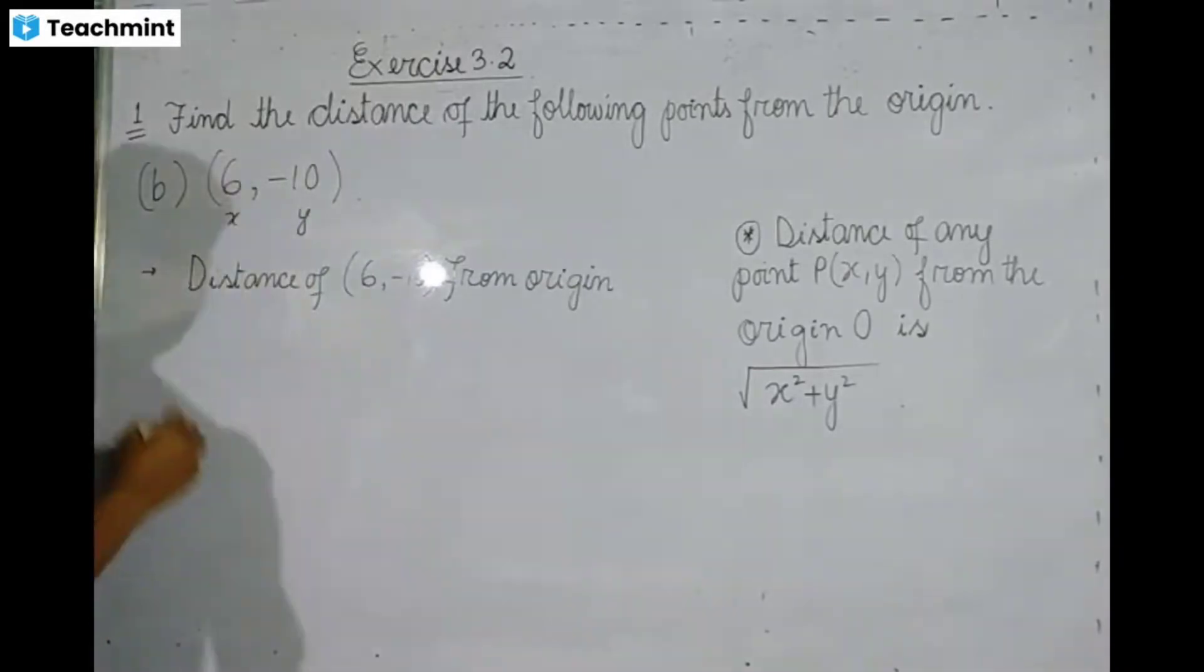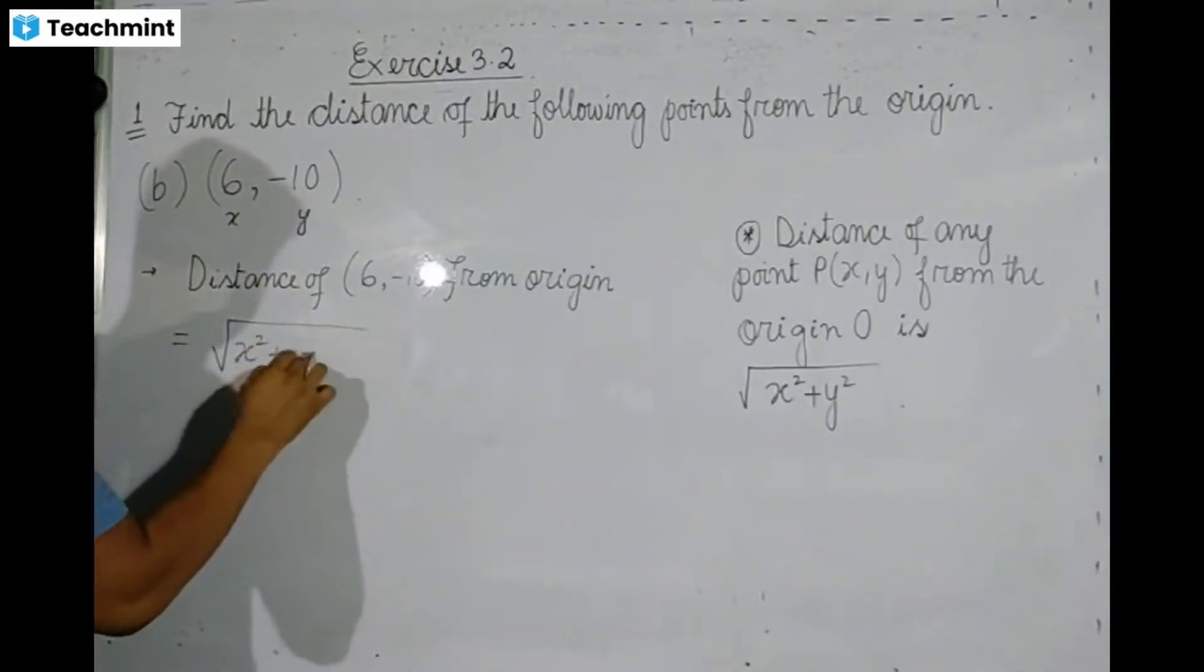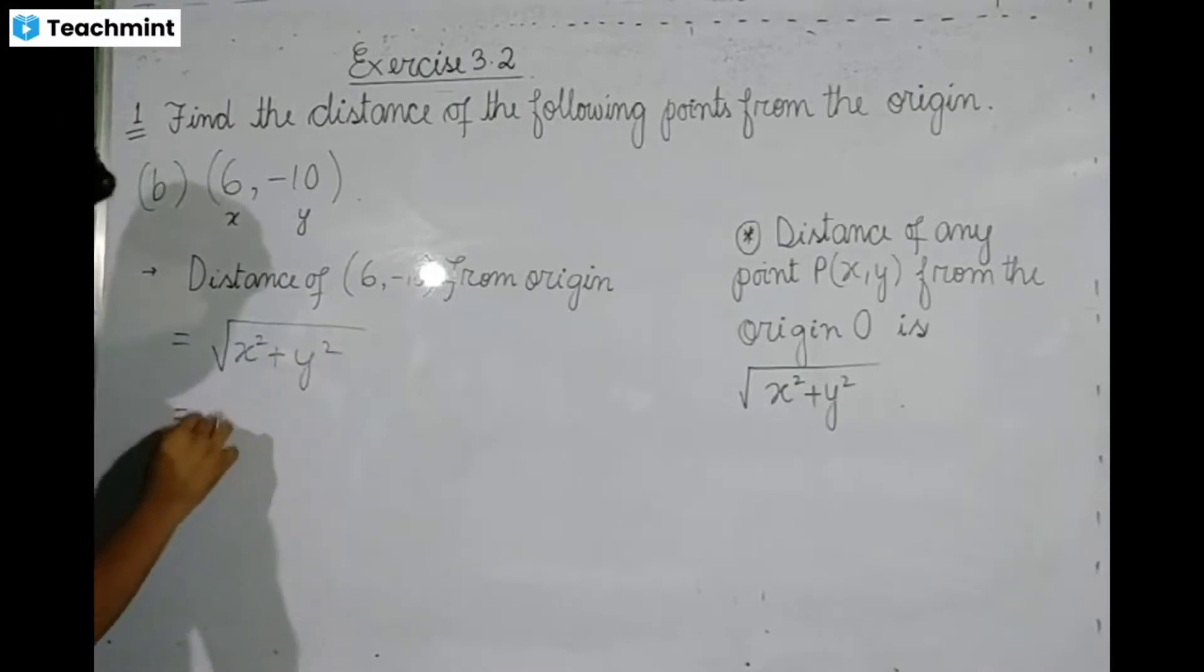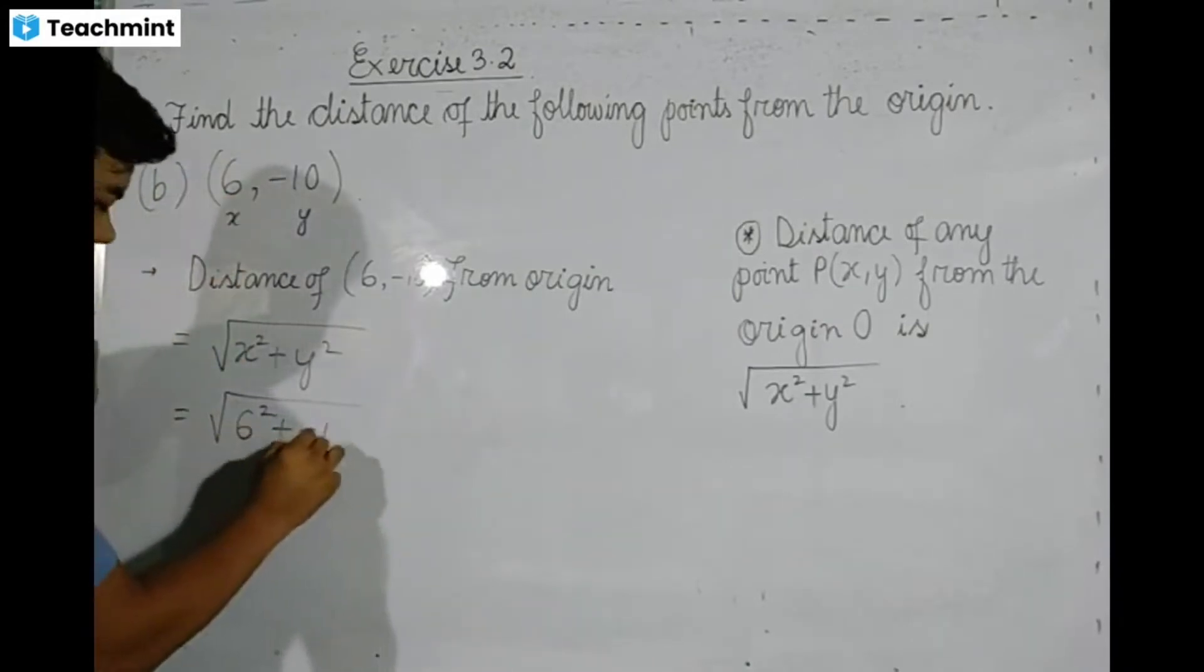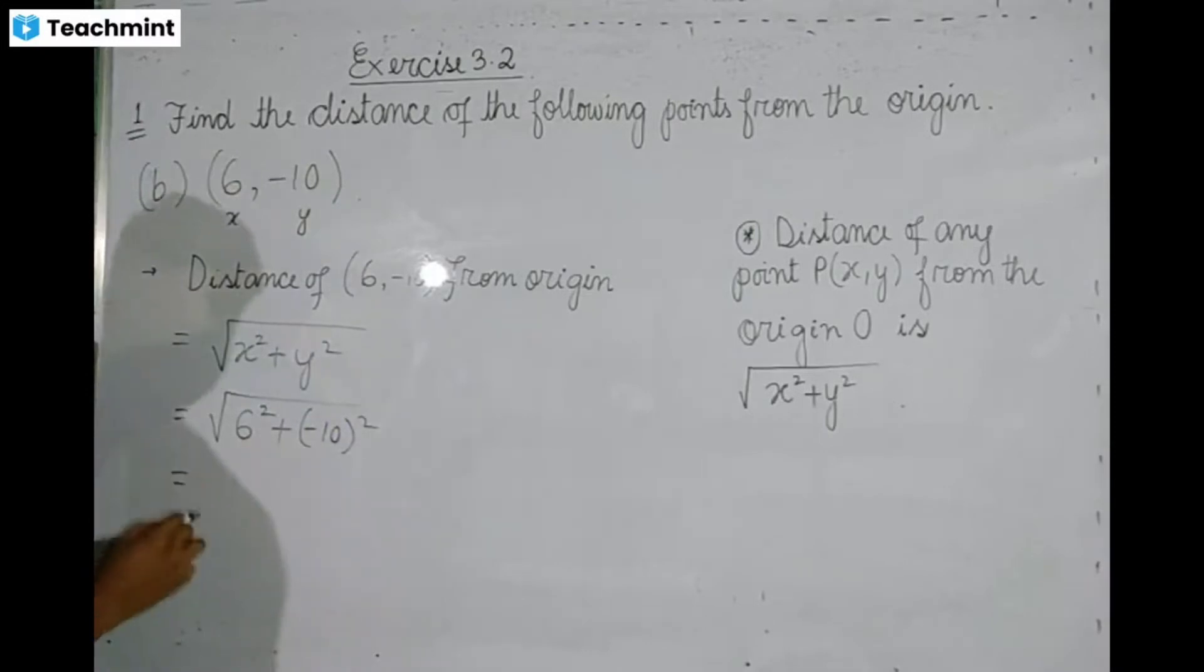The formula for distance from origin is root over x² plus y². Substituting the values: x = 6, so 6² = 36, plus y = -10, so (-10)².